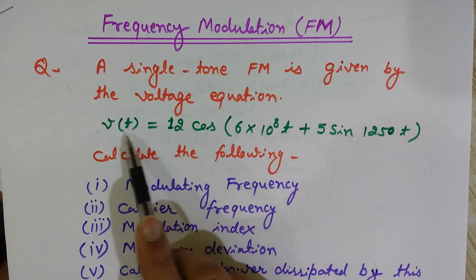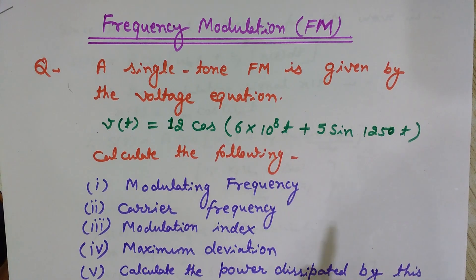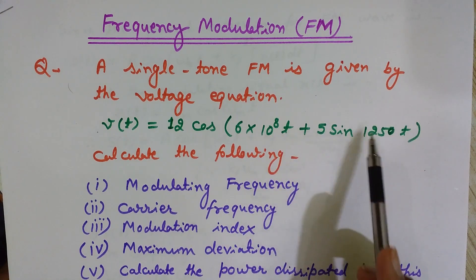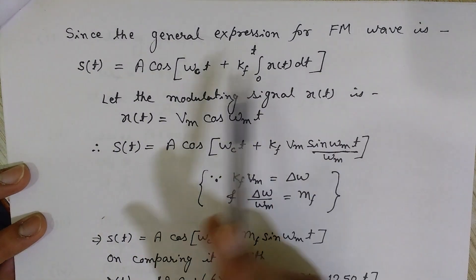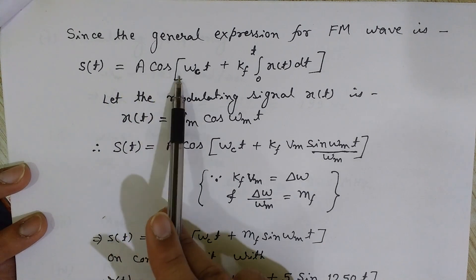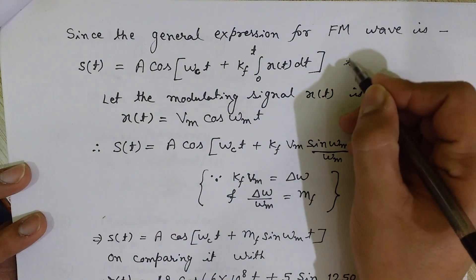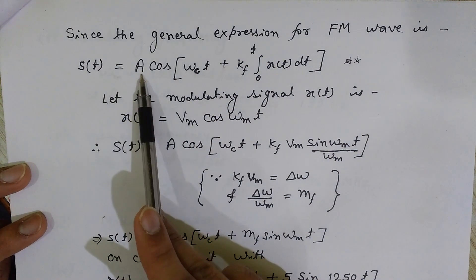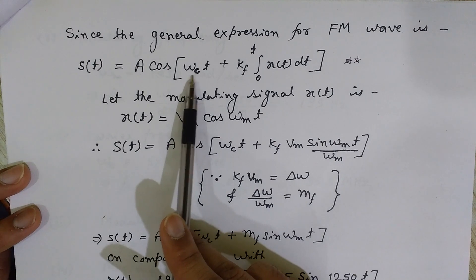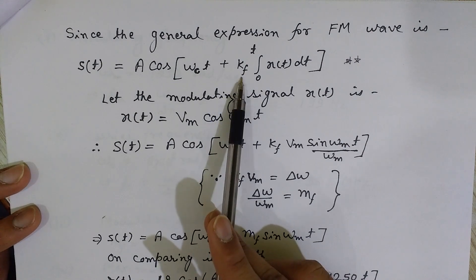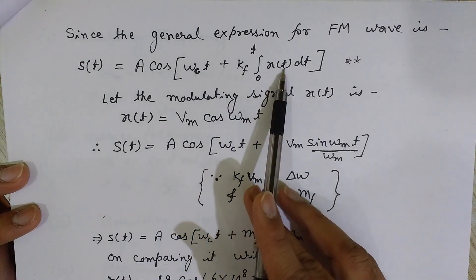First, I will convert this given equation into the general format of an FM modulated wave, then compare and calculate all required values. The general expression for the FM wave is: s(t) = A cos(ωct + kf ∫₀ᵗ x(t) dt). This is a very important equation. Here, A is the maximum amplitude of the modulated wave, ωc is the carrier frequency, kf is the proportionality constant also known as the frequency sensitivity of the modulator, and x(t) is the message signal.